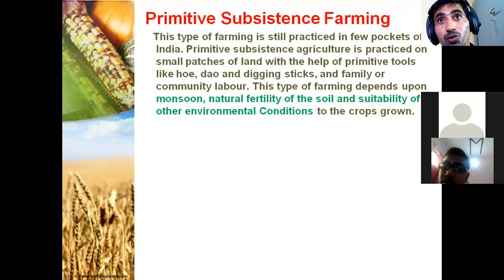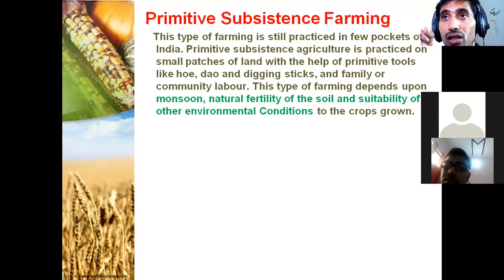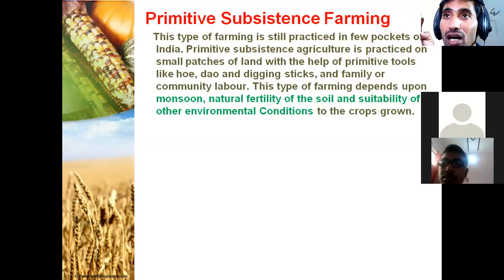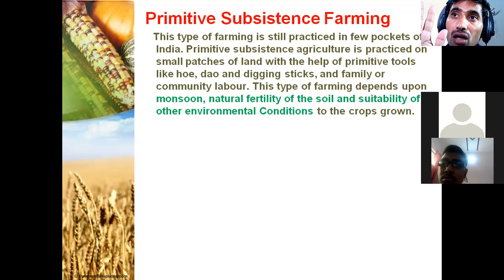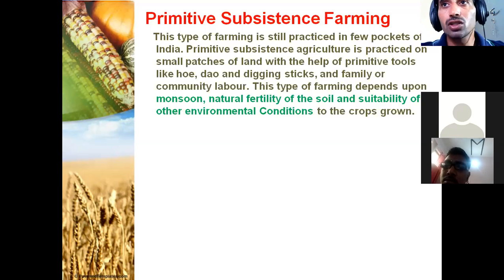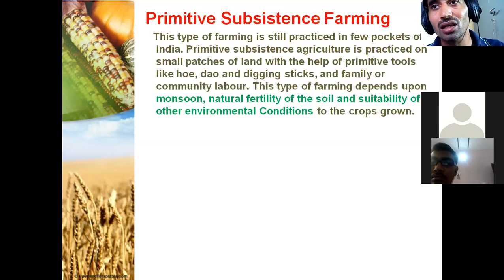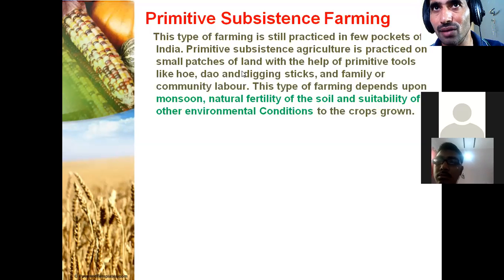The second factor is technology — which types of technology are available in a particular region, and how many farmers are capable of using modern technology. In the ninth standard Economics syllabus, we discussed the story of village Palampur, where we also discussed the green revolution. The green revolution was only successful in Punjab, Haryana, and Western UP because farmers in these regions were strong enough to use modern technology and modern equipment.